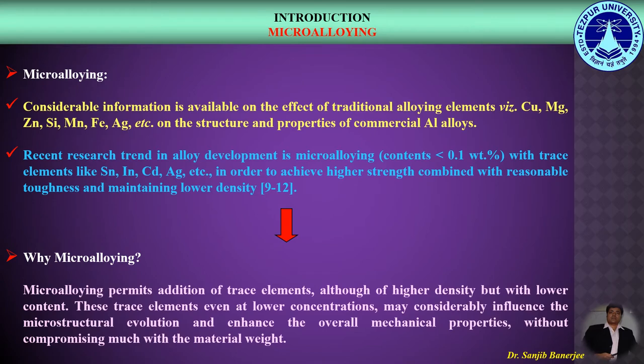Regarding micro-alloying, the recent trend in alloy development is micro-alloying where contents would be less than 0.1 weight percent with trace elements, in order to achieve higher strength combined with reasonable toughness while maintaining lower density. Micro-alloying permits addition of trace elements — although of higher density — but at lower content. These trace elements, even at lower concentrations, may considerably influence microstructural evolution and enhance overall mechanical properties without compromising material weight.